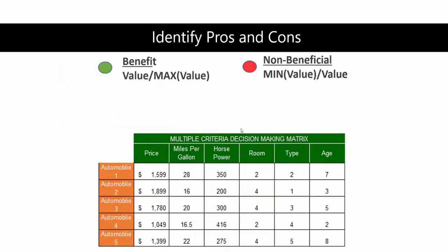Let's identify what's beneficial and what's non-beneficial out of these particular features: price, miles per gallon, horsepower, room, type, and age. Some of those are going to be good for us, like a lower price, and then some will be bad for us, which would be maybe lower miles per gallon. We need to learn how to put that on a zero to one scale, which is known as normalizing.